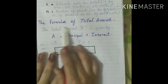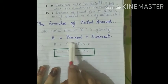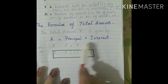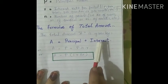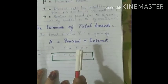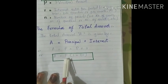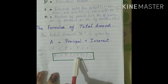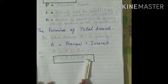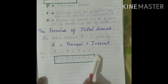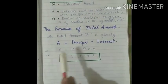Now the formula for the total amount. The total amount is given by principal plus interest: A = P + PNR. Taking P as common, we get A = P(1 + NR). This is the formula of total amount, meaning it is the sum of principal and interest.